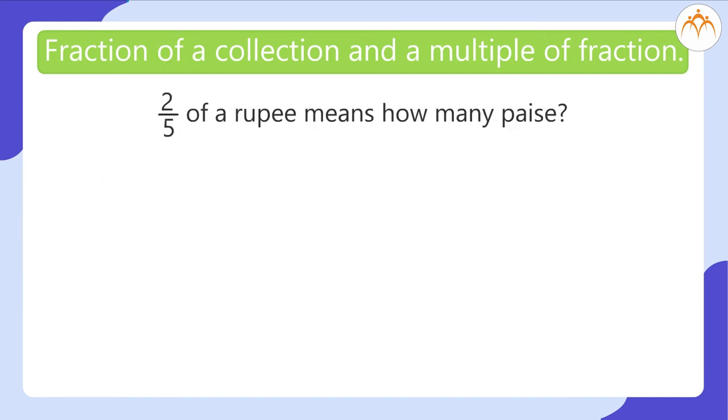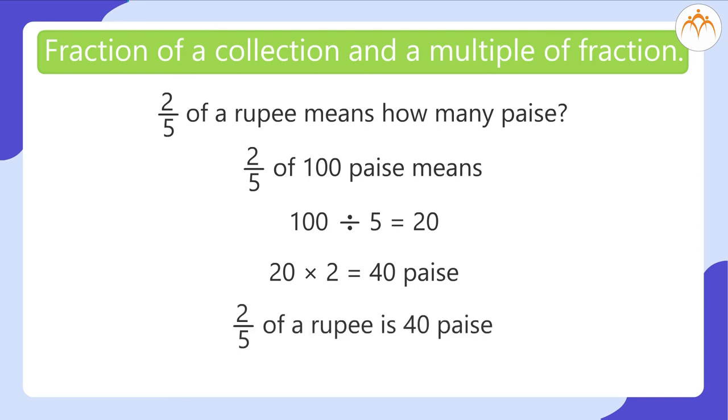2 by 5 of a Rupee means how many Paise? 2 by 5 of 100 Paise means 100 divided by 5 which is equal to 20 and 20 multiplied by 2 is equal to 40 Paise. So, the answer is 2 by 5 of a Rupee is 40 Paise.